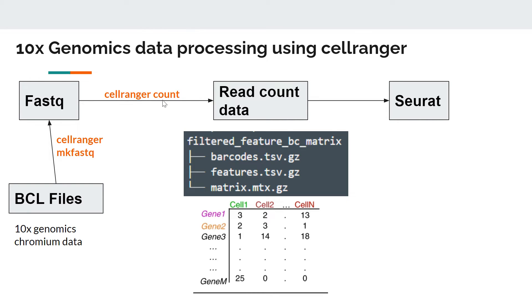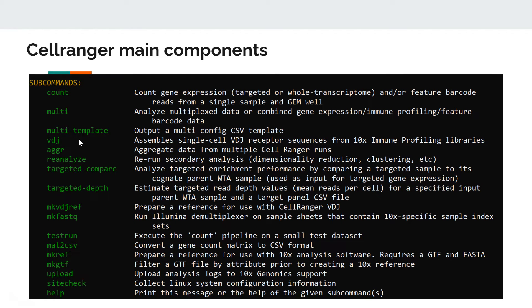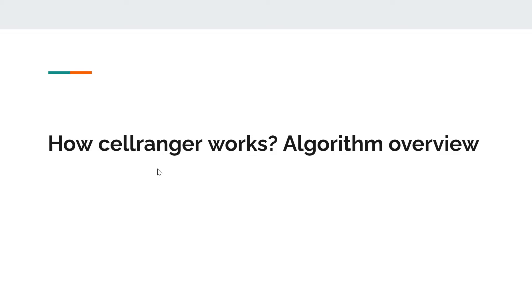In this video we will focus mainly on the count command, which converts FASTQ to read count data. Apart from mkfastq and count, there is one more command: aggregation. mkfastq is for BCL to FASTQ, count is for FASTQ to count for a single sample analysis, while aggregation is used to aggregate multiple count datasets. There are also other components like multi, but we will primarily focus on the count command.